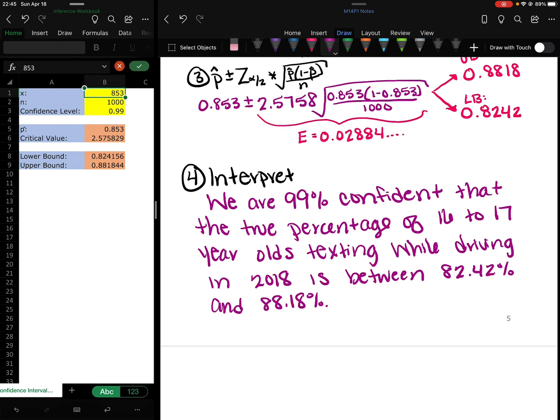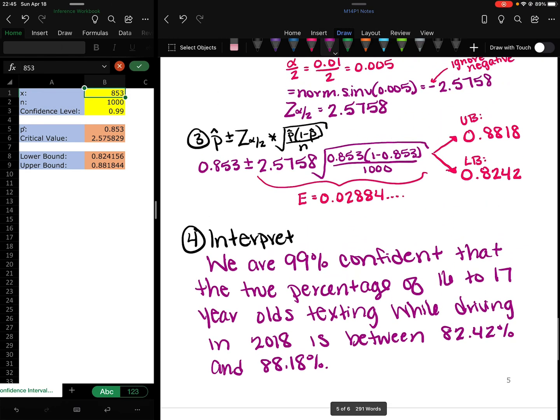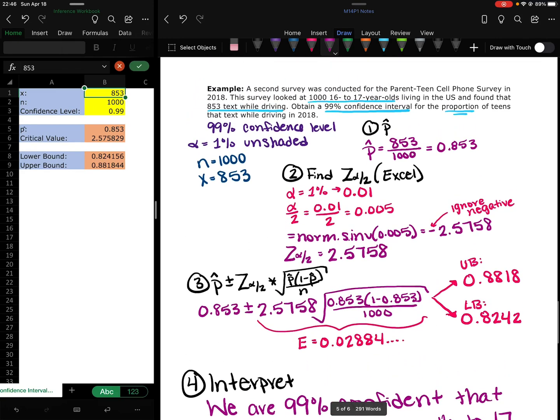It could be 83%, it could be 87%, it could be 88.18% exactly. I don't know where it falls in that range. All I know is that it falls somewhere in that range. And we used our sample proportion of 0.853 as our starting estimate to build this interval. So that is how you create confidence intervals for proportions.